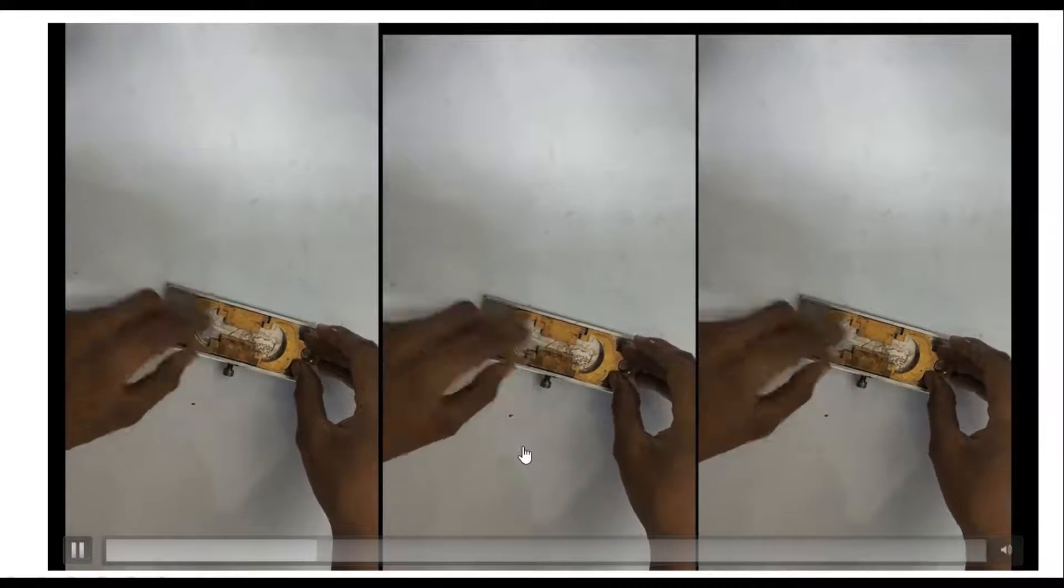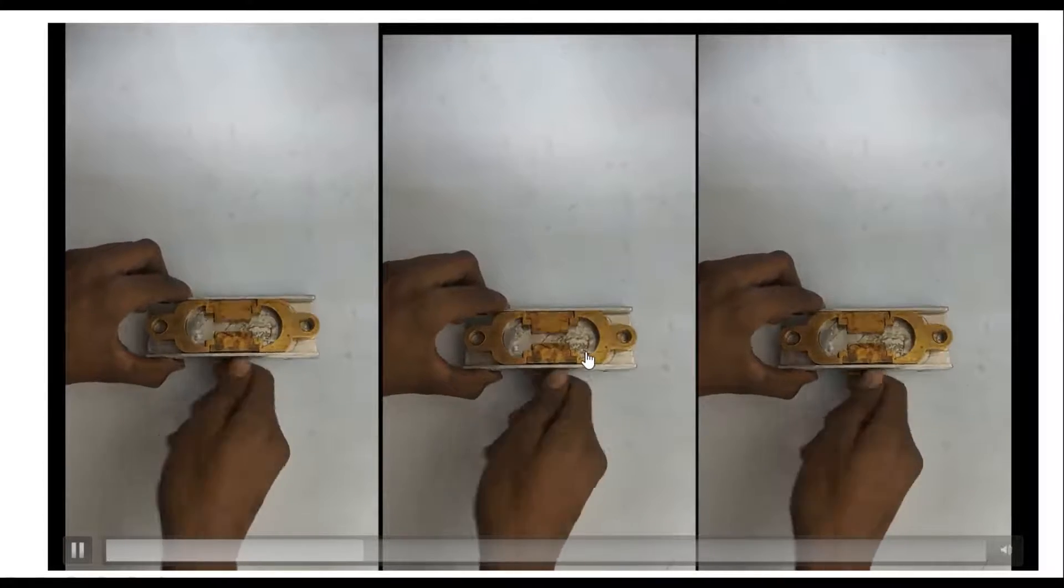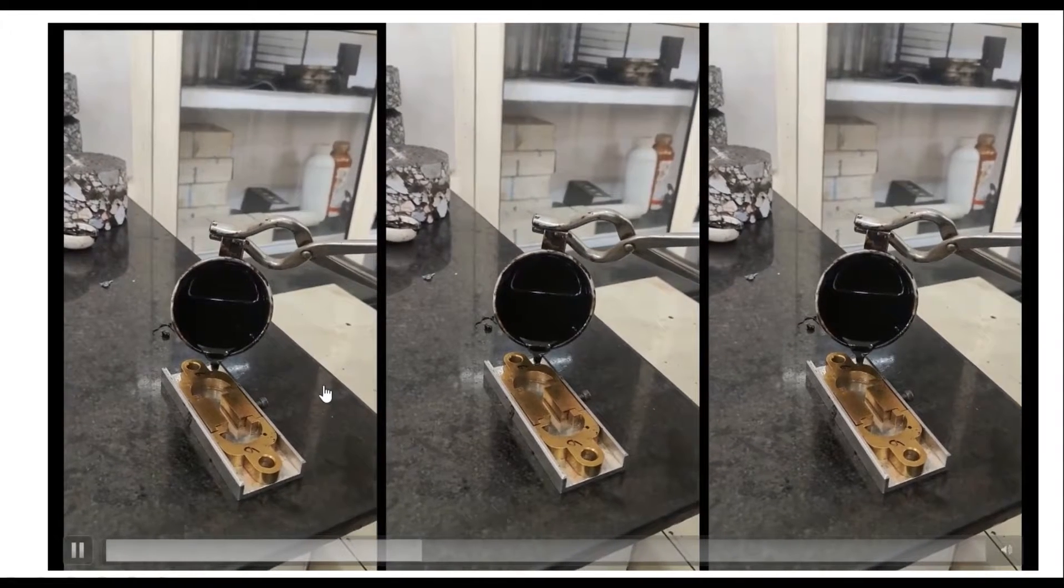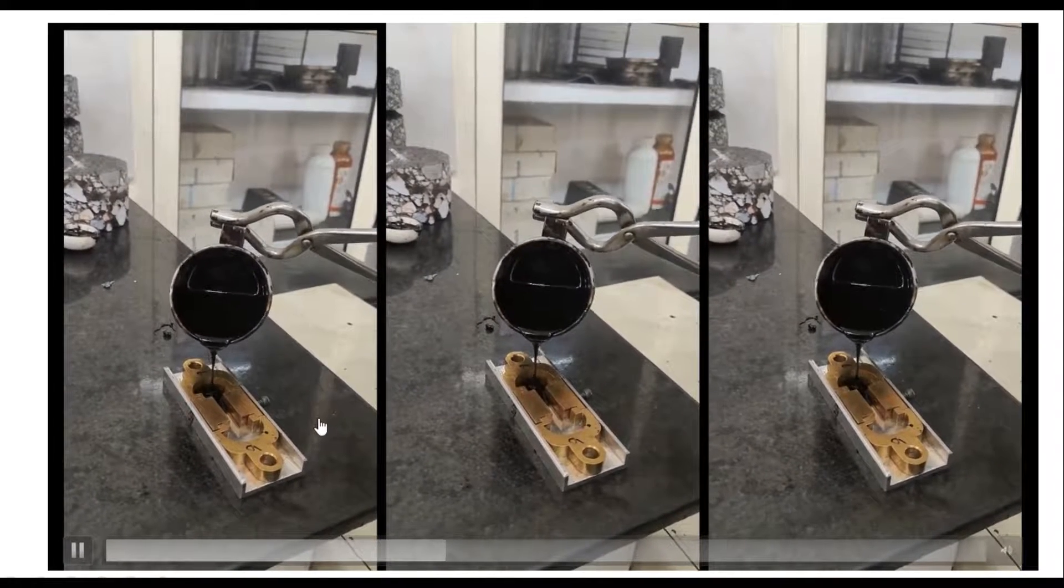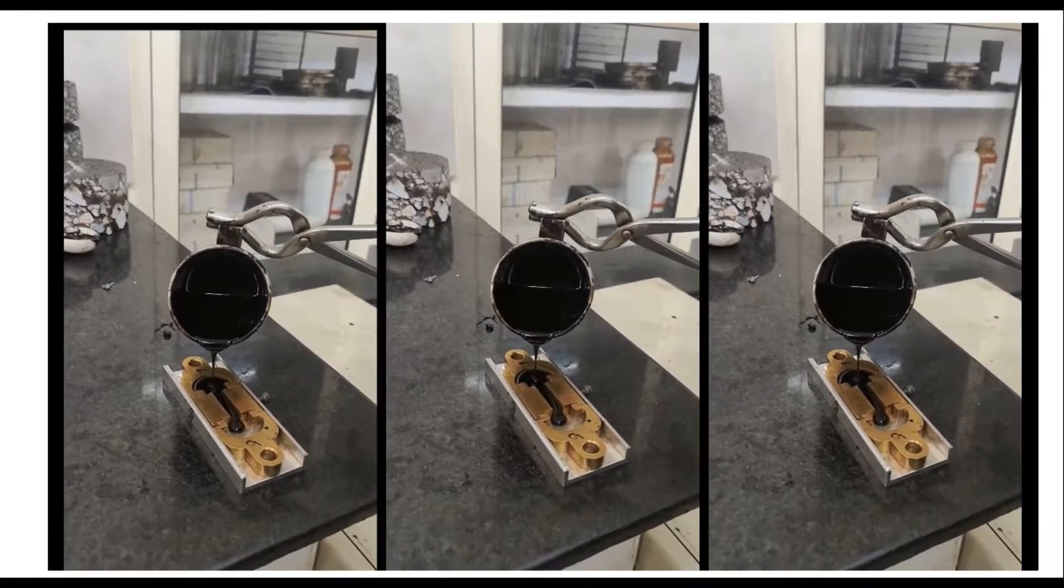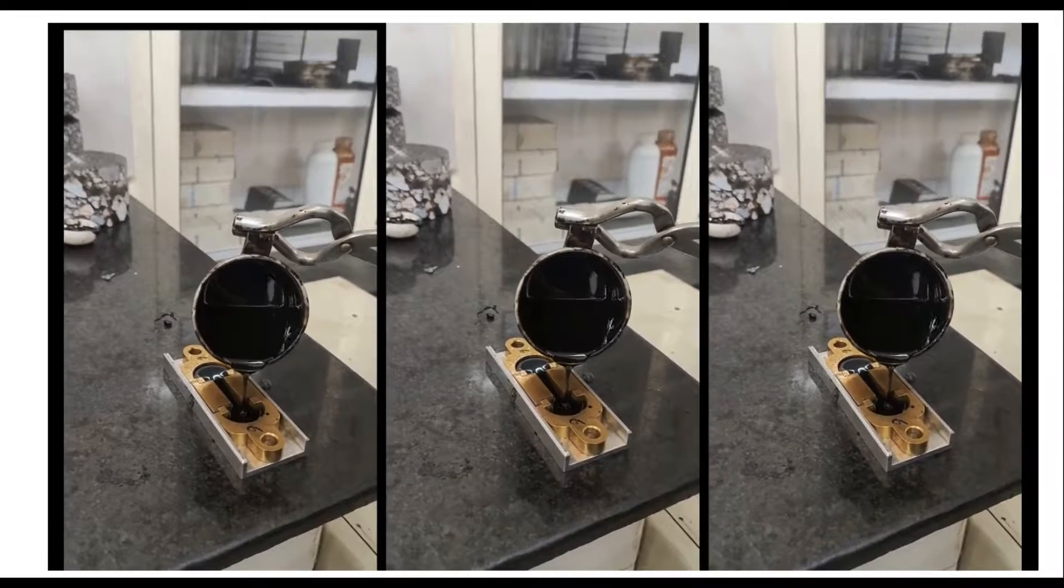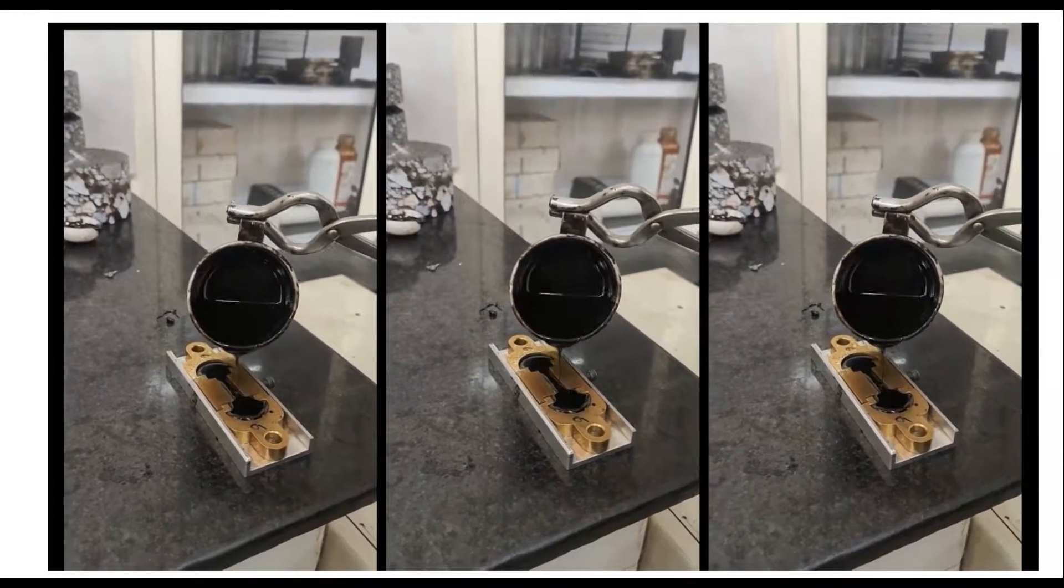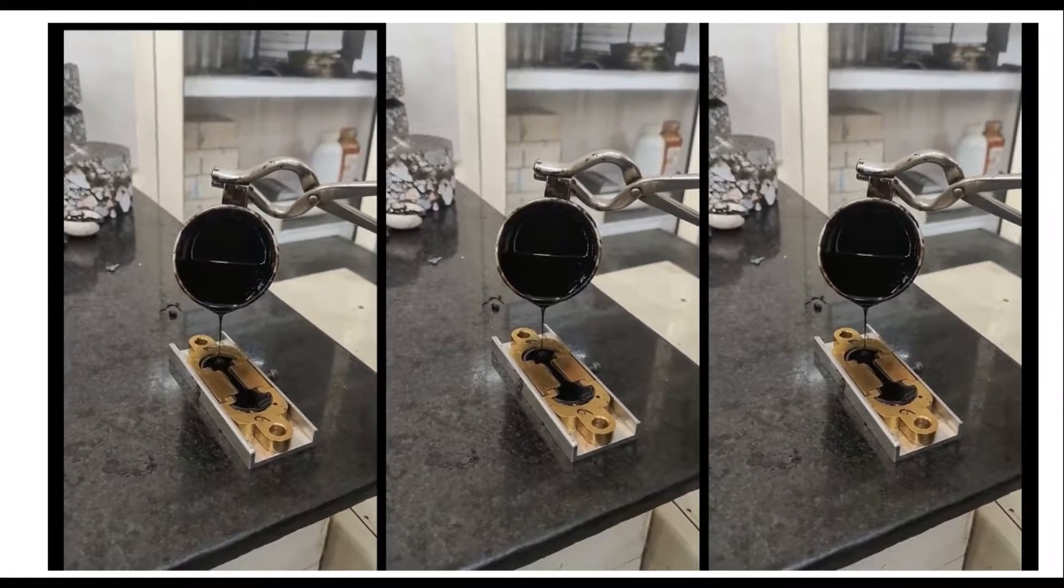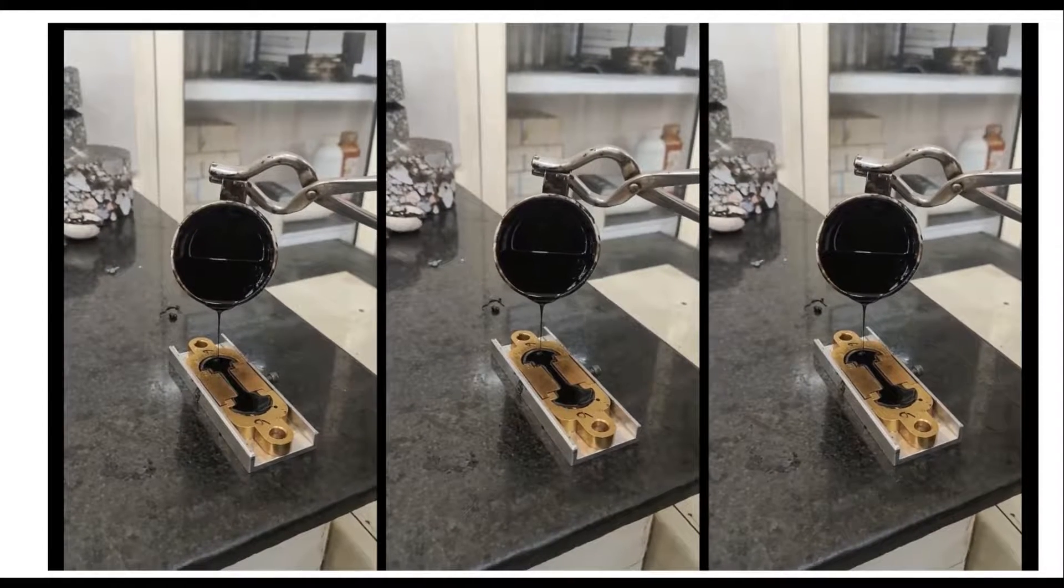This is the mold. Now tie this screw so that it comes into shape. Now pour the hot bitumen into the sample. Fill the material until it is slightly more than level full.